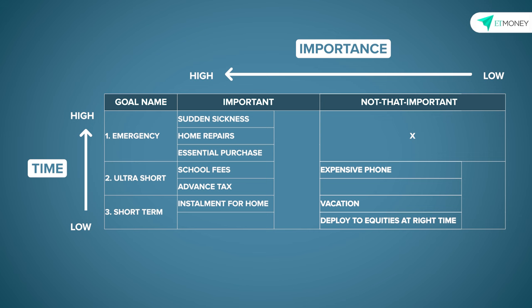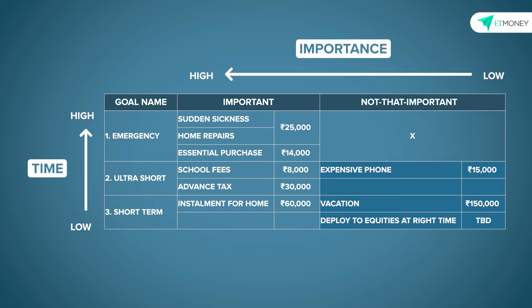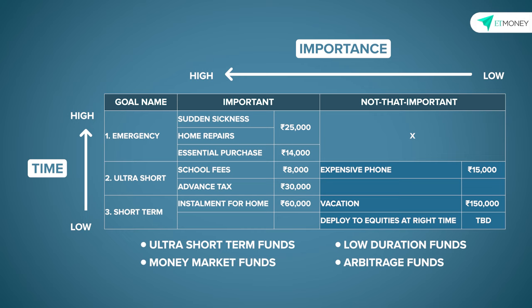The next step, step two, is for you to allocate the right financial product to each of your short term goals. The money allotted to important and immediate goals should be invested only in super safe instruments like a savings account, a fixed deposit, overnight funds or liquid funds. However, for the other goals that are not that important or are a little into the future, then one can explore the slightly longer duration options like an ultra short term fund, a money market, a low duration fund and even an arbitrage fund, which is normally used for parking money between six to 18 months.